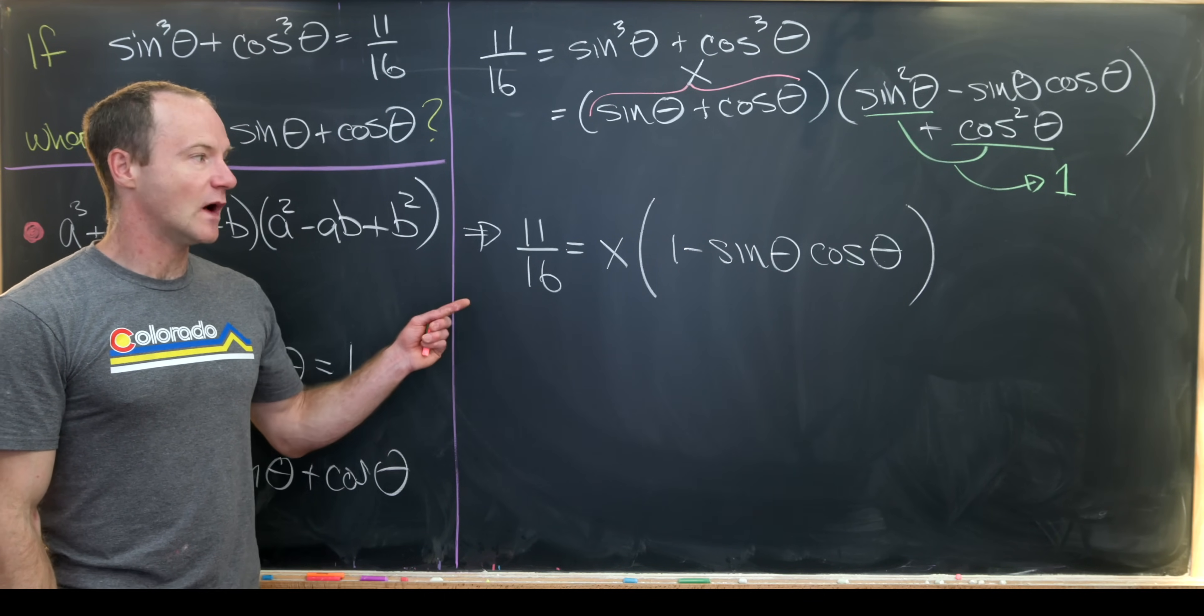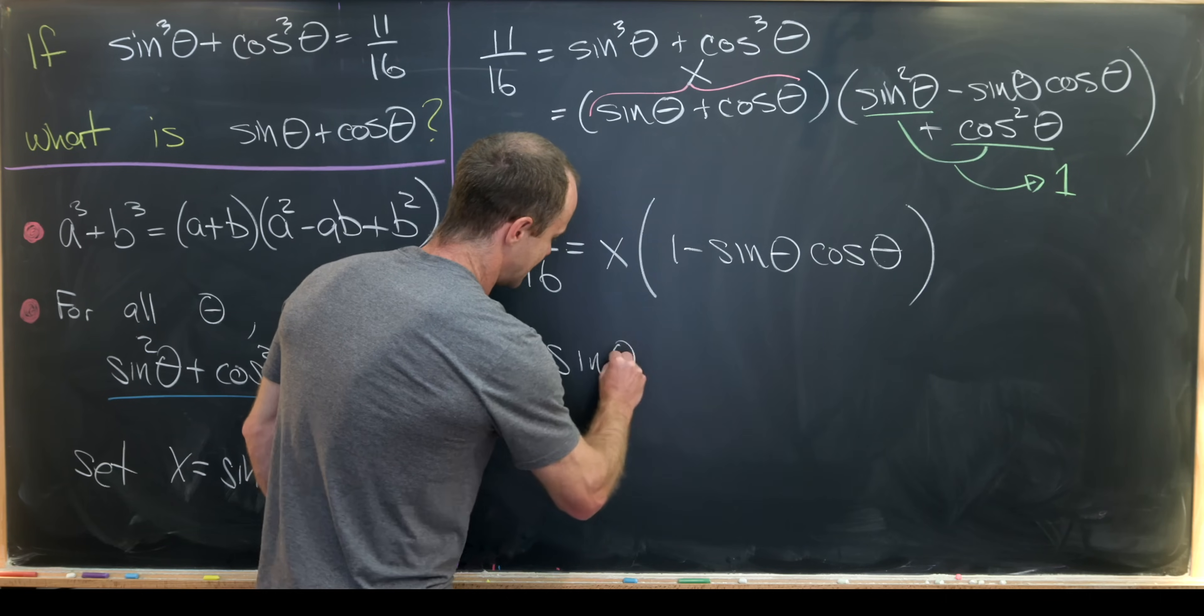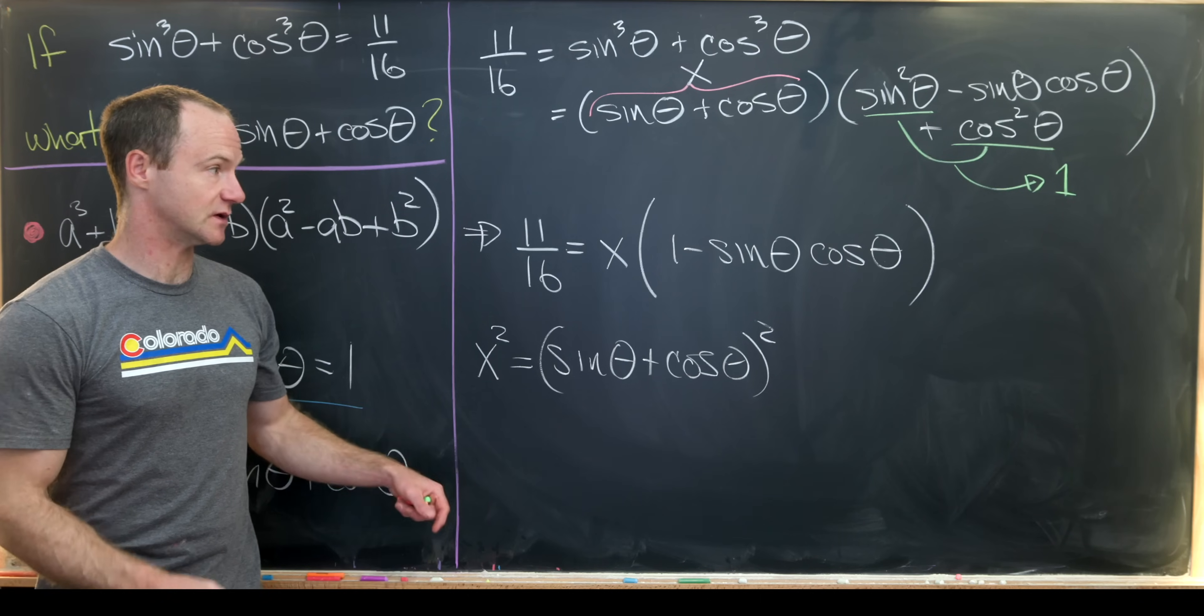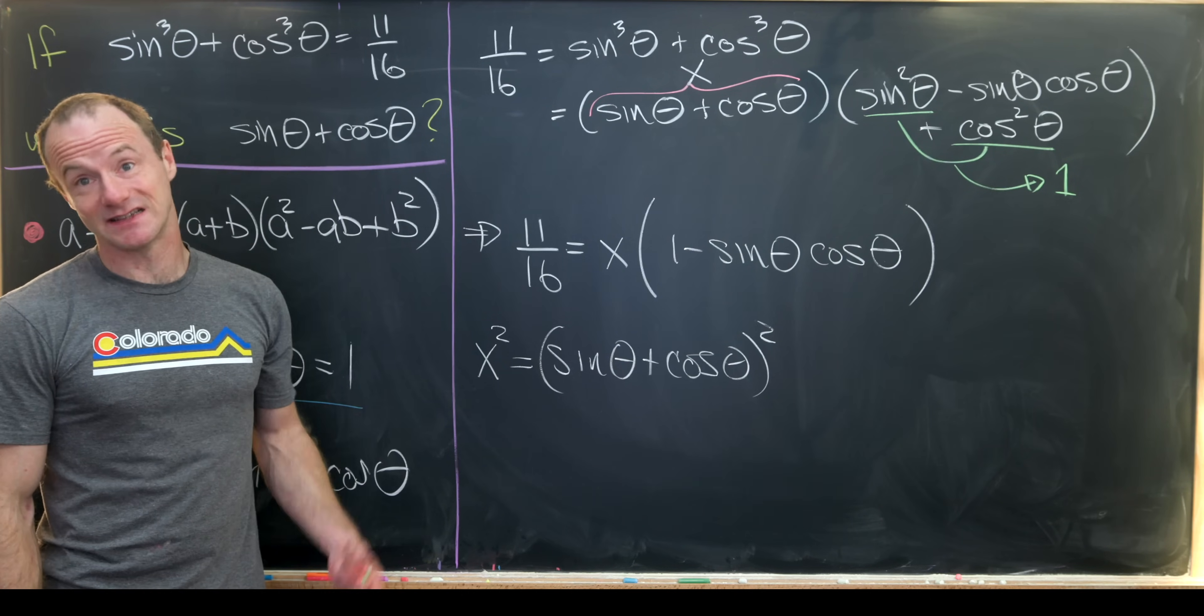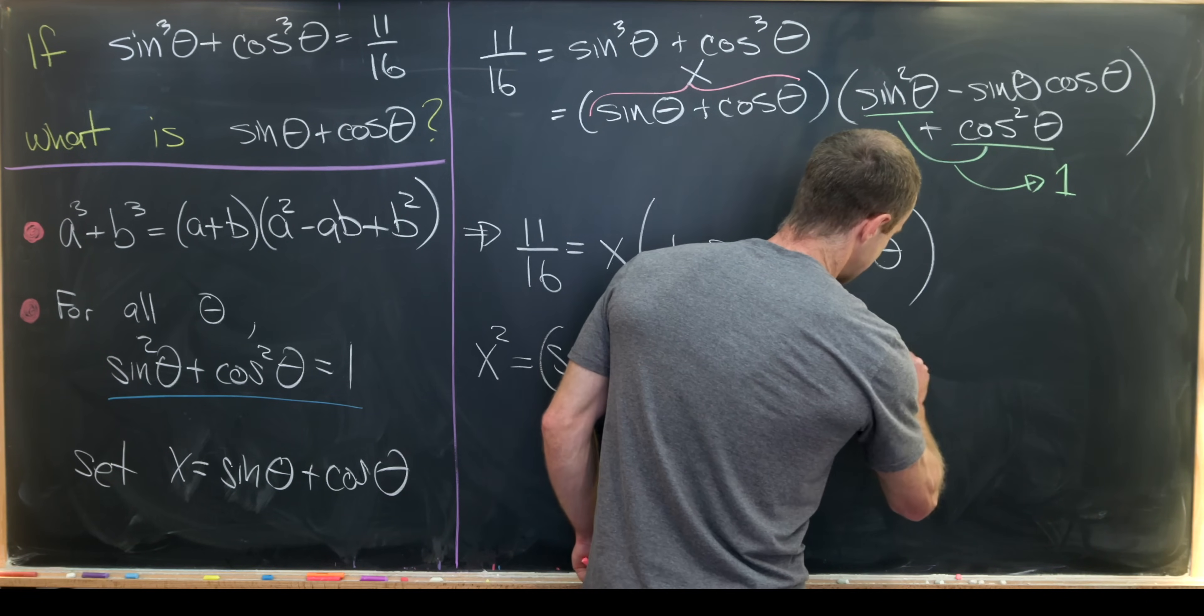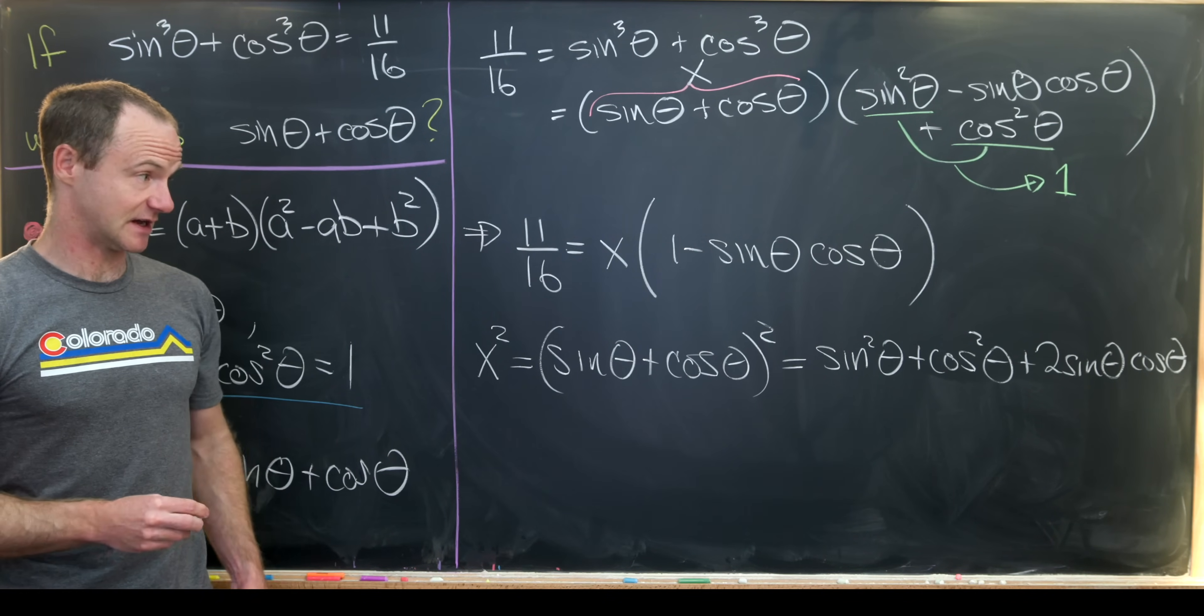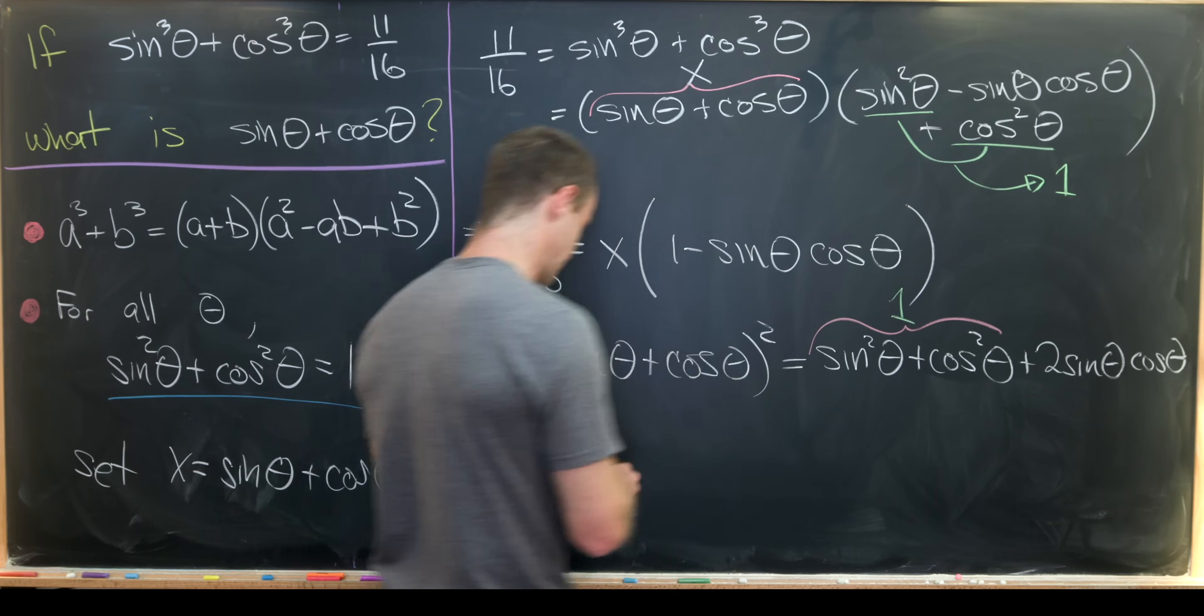Notice we still have something with sine theta plus cosine theta, so we need to work on that a little bit. How might we do that? Well, let's look at x squared. Notice x squared is the same thing as sine theta plus cosine theta squared. The motivation for this is we'll end up with a sine squared plus cosine squared, so we'll end up with part of the Pythagorean identity, and we'll also end up with a sine theta times cosine theta. Let's multiply this out. This gives us sine squared theta plus cosine squared theta plus two sine theta cosine theta.